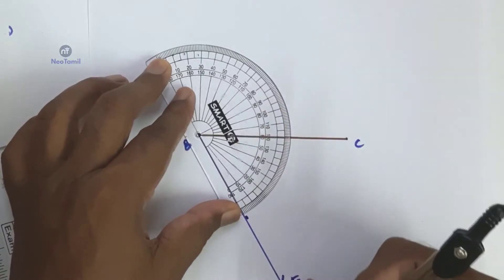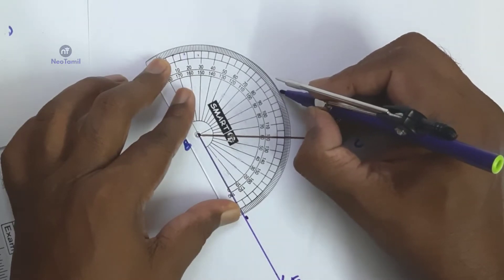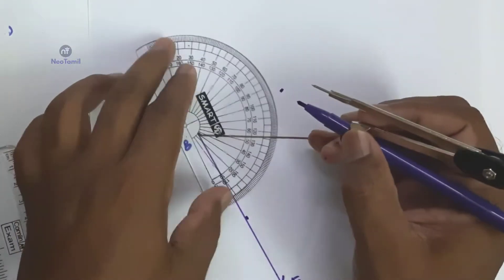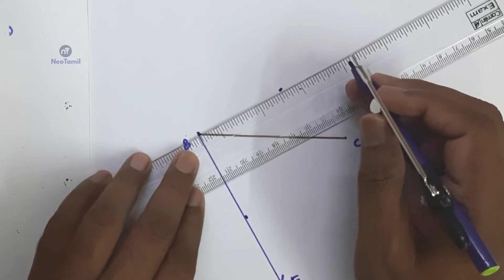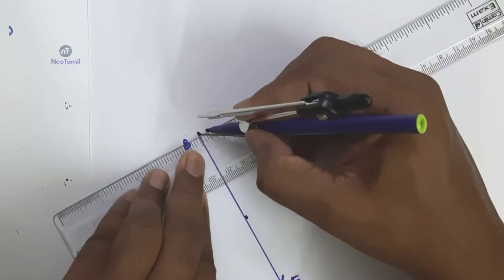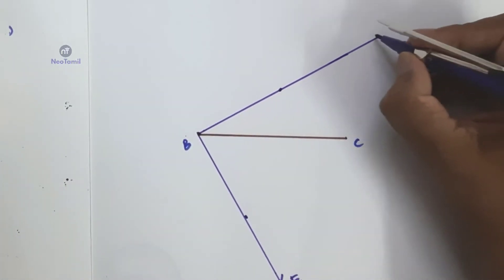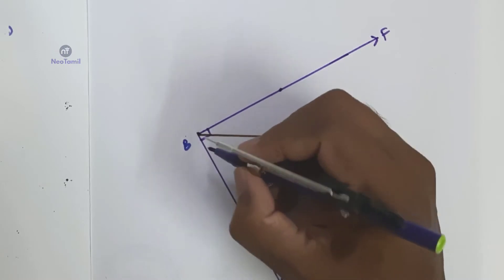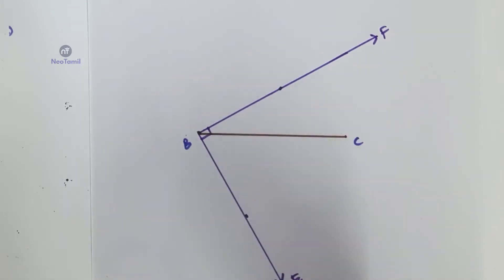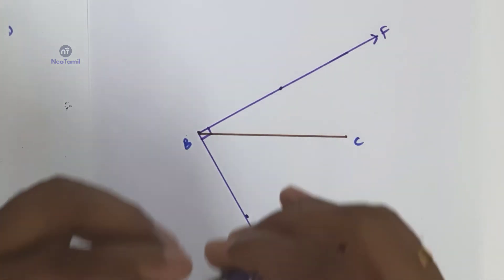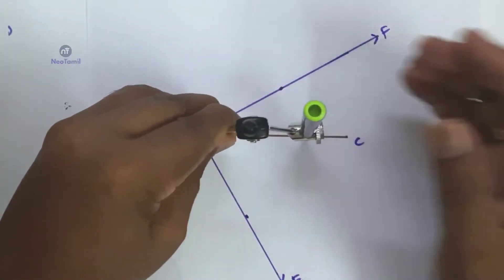Draw angle EBF equal to 90 degrees — a perpendicular to BE. BF is perpendicular to BE. Now the next step is the perpendicular bisector of BC: take more than half the length of BC.